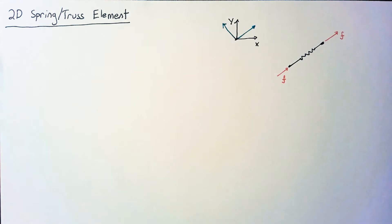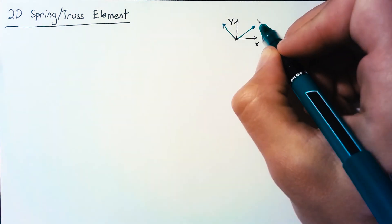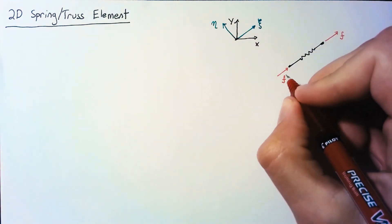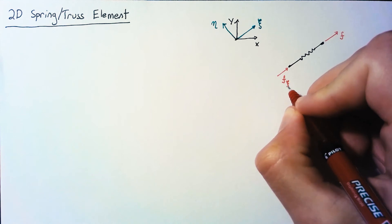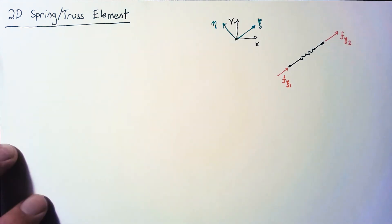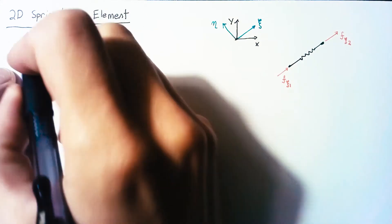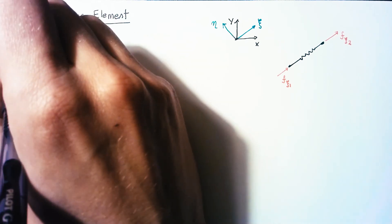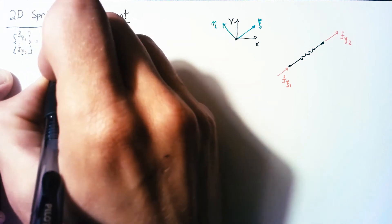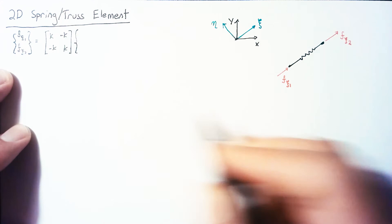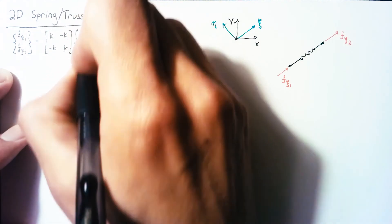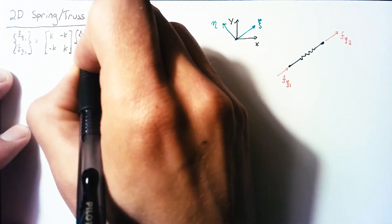We need to name this local reference frame something — I like the Greek letters xi and eta. So the force in the xi direction for node one and the force in the xi direction for node two look exactly like our 1D formulation in the xi-eta reference frame. We can use our old stiffness matrix: k, negative k, negative k, k — acting on the displacements in the xi direction, delta xi 1 and delta xi 2.